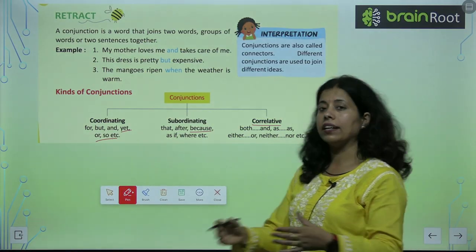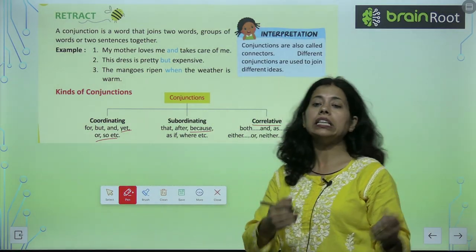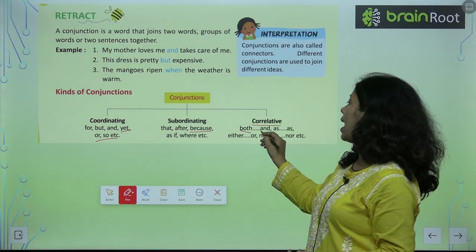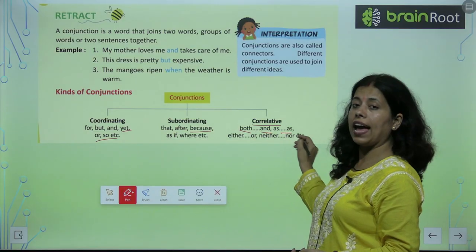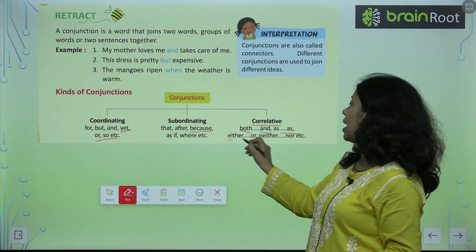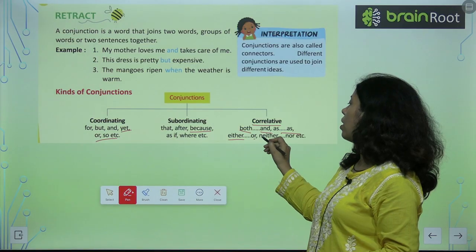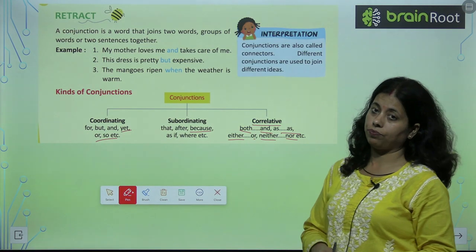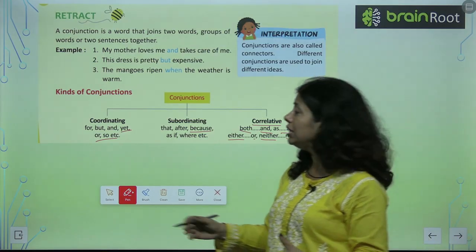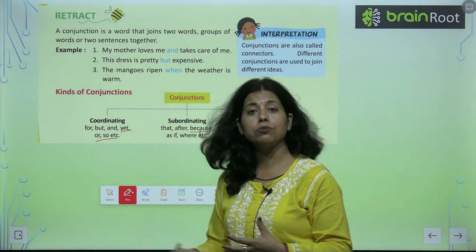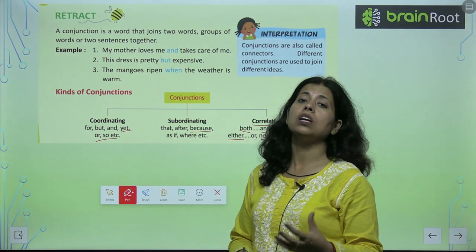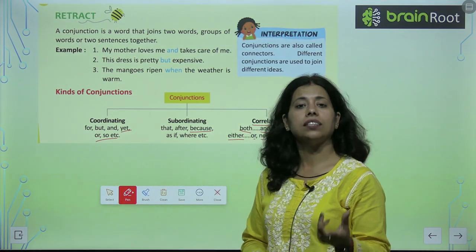Correlative conjunctions: both...and, as...as, either...or, neither...not. So these are some types of conjunctions which we use in our sentences.